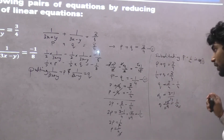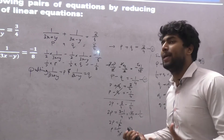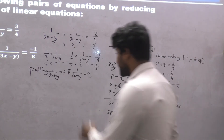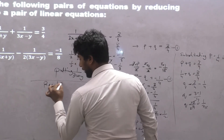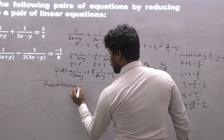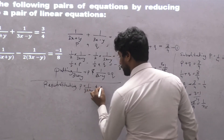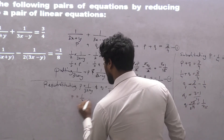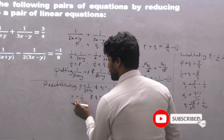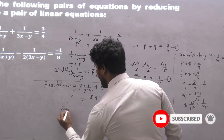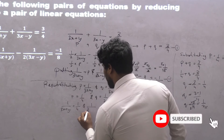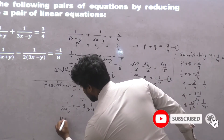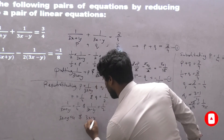Now I have p equals 1 upon 4 and q equals 1 upon 2. Resubstituting: since p equals 1 upon (3x + y) equals 1 upon 4, and q equals 1 upon (3x − y) equals 1 upon 2, I reciprocate both sides to get 3x + y equals 4 and 3x − y equals 2.